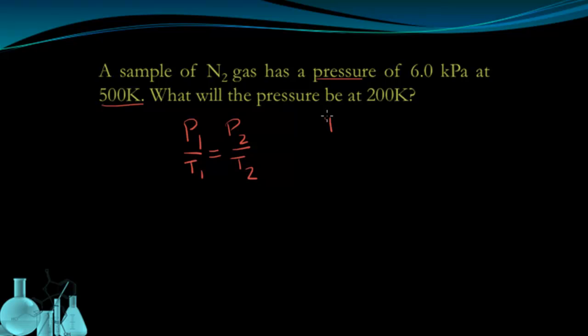The first thing I'm going to do is identify my variables. P1 is the initial pressure, 6.0 kPa. T1, my initial temperature, is 500 K, 500 Kelvin.